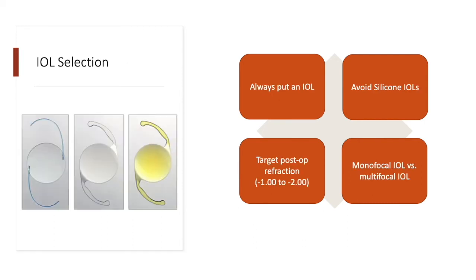For IOL calculations in high myopia, standard formulas tend to select IOLs of insufficient power, leading to unwanted hyperopia postoperatively. Many methods have been proposed to overcome this issue including constant optimization for negative IOLs, axial length adjustment, and methods utilizing artificial intelligence and pattern recognition that are independent of effective lens position and axial length. There are also trends toward ray tracing and intraoperative aberrometry. Keep in mind that the aim is to always implant an IOL regardless of power — it acts as a barrier to anterior vitreous movement and subsequent retinal detachment. Avoid silicone IOLs as these patients have a higher chance of undergoing retinal surgery in the future.